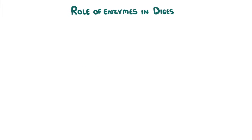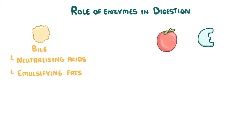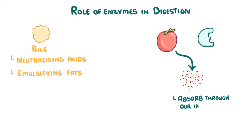In today's video we're going to take a look at the role that enzymes play in digestion, and at how our bile helps by neutralizing acids and emulsifying fats. As you might have seen in our previous video on digestion, enzymes are essential for helping us break down the large molecules that we eat into much smaller soluble molecules that we can absorb through our intestinal lining.